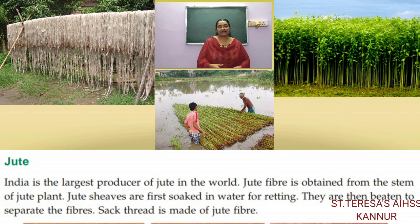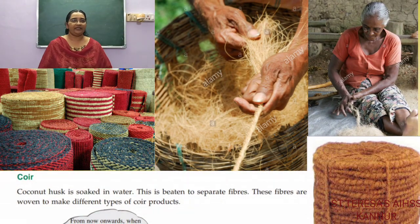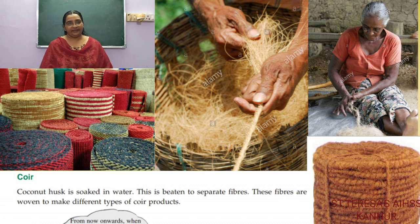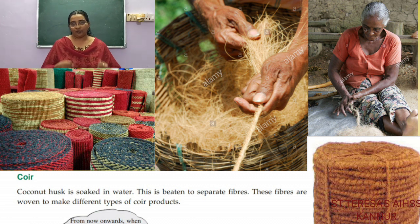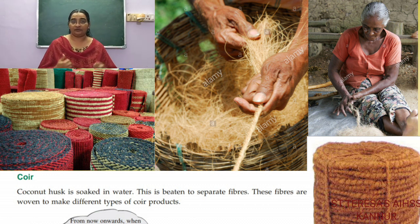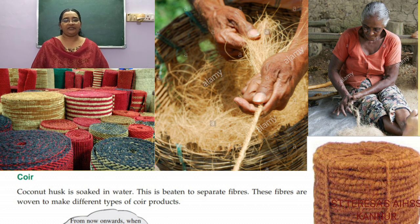Jute fiber is mainly used for making sacks and for making thread. The next crop is coir, which is very familiar to us. Coir is obtained from the coconut husk and is mainly produced in Kerala. The husk of the coconut is soaked in water, beaten up, the fibers are removed, and they are made into threads. These coir ropes and threads are used for making different coir products, of which Kerala produces a large quantity.